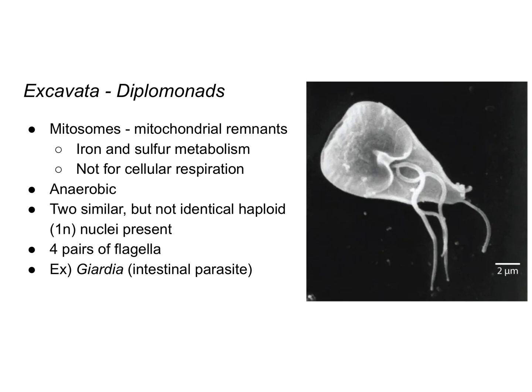Diplomonads have two similar but not identical haploid nuclei — haploid means they have one set of chromosomes instead of paired chromosomes. They also have two pairs of flagella. One example of a diplomonad is Giardia, which is an intestinal parasite that you get from drinking water infested with this protist.